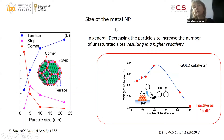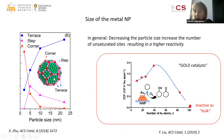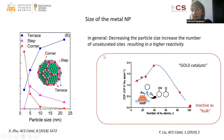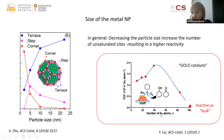Another well-known way to modify the activity of metal nanoparticles is changing their size. In general, decreasing particle size increases the number of unsaturated sites — steps and corners — which generally results in higher reactivity. This can be clearly seen in the case of gold catalysts: gold is inactive in bulk form, but its activity increases, sometimes exponentially, as particle size decreases.